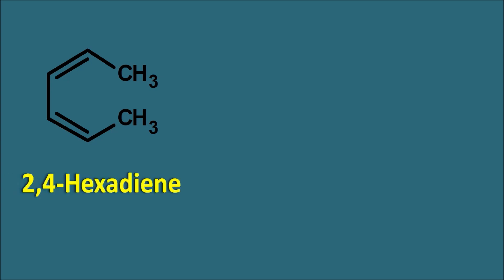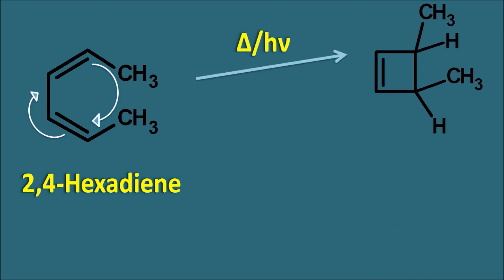Suppose here we have taken the 2,4-hexadiene, which has two double bonds. When we supply energy in the form of either photo or thermal energy, this compound can undergo the electrocyclic reaction. This pi bond is going to be converted into a sigma bond, and the other pi bond is going to be delocalized such that it gives a cyclic product — and this cyclic product may be like this or it may be like this.